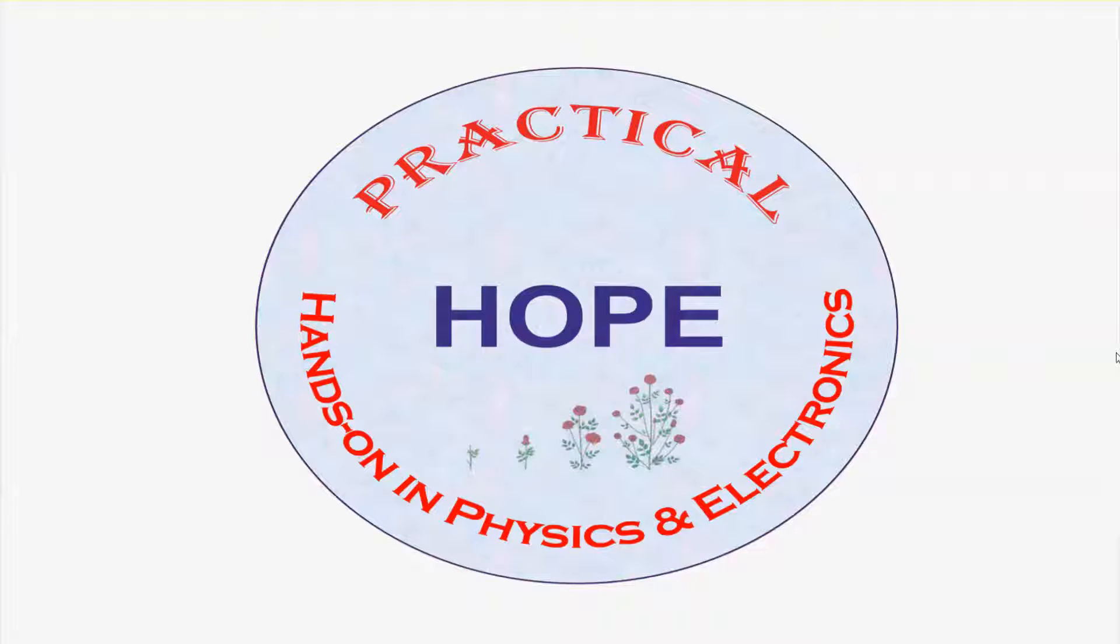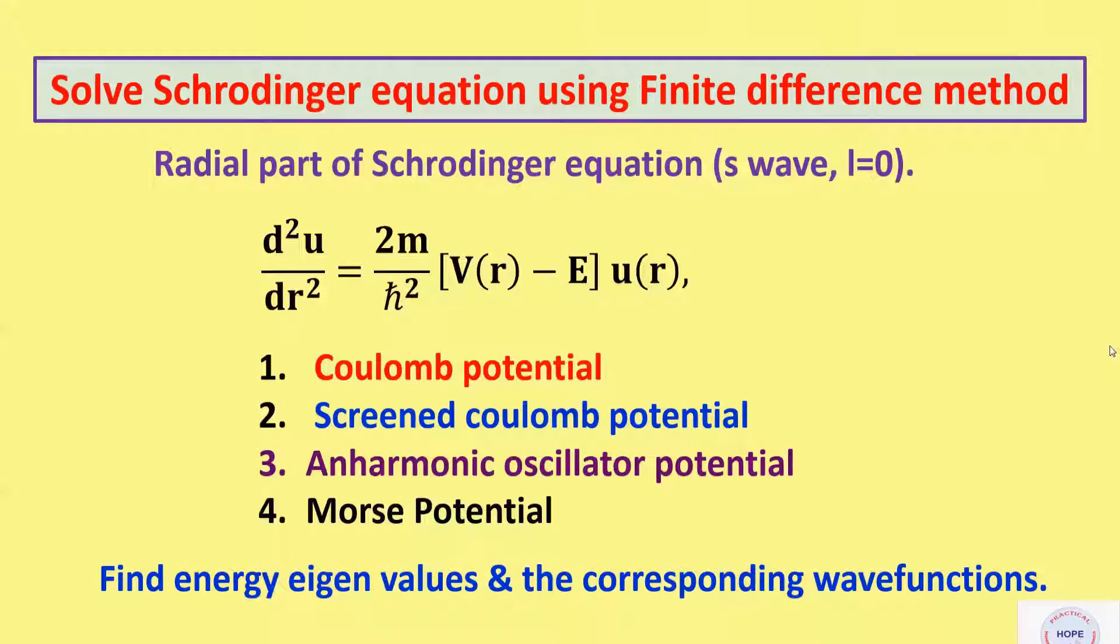Hello and welcome to our next video. Today we are going to see how finite difference method can be used to solve Schrodinger equation for four different potentials: Coulomb potential, screened Coulomb potential, harmonic oscillator, and Morse potential. We are going to find the energy eigenvalues and the corresponding wave functions.